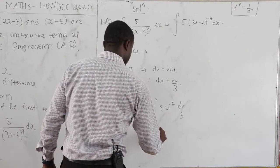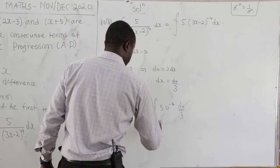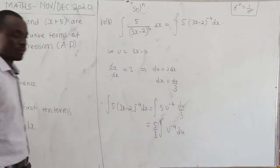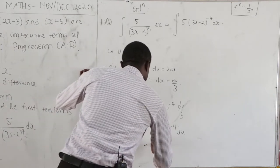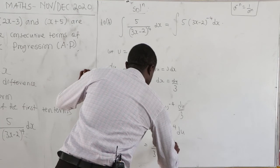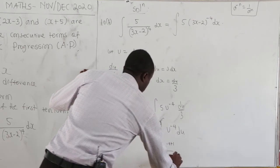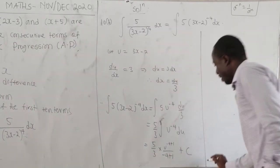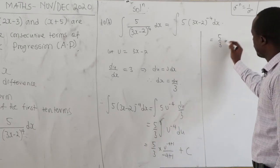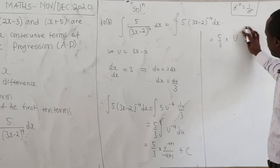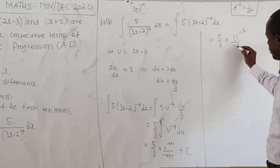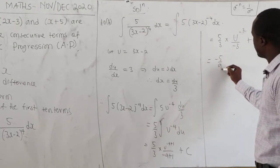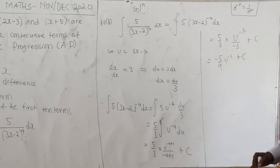Bringing 5 over 3 outside: 5 over 3 times the integral of u to the negative 4 du. Integrating: 5 over 3 times u to the negative 3 over negative 3 plus c, which simplifies to negative 5 over 9 times u to the negative 3 plus c.